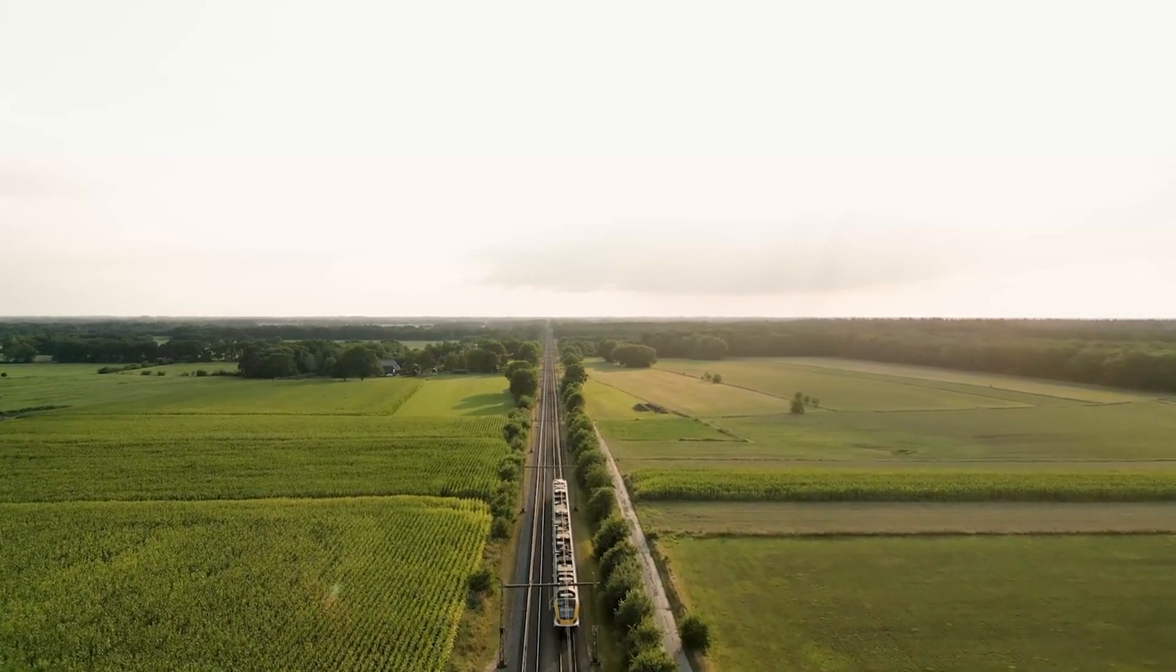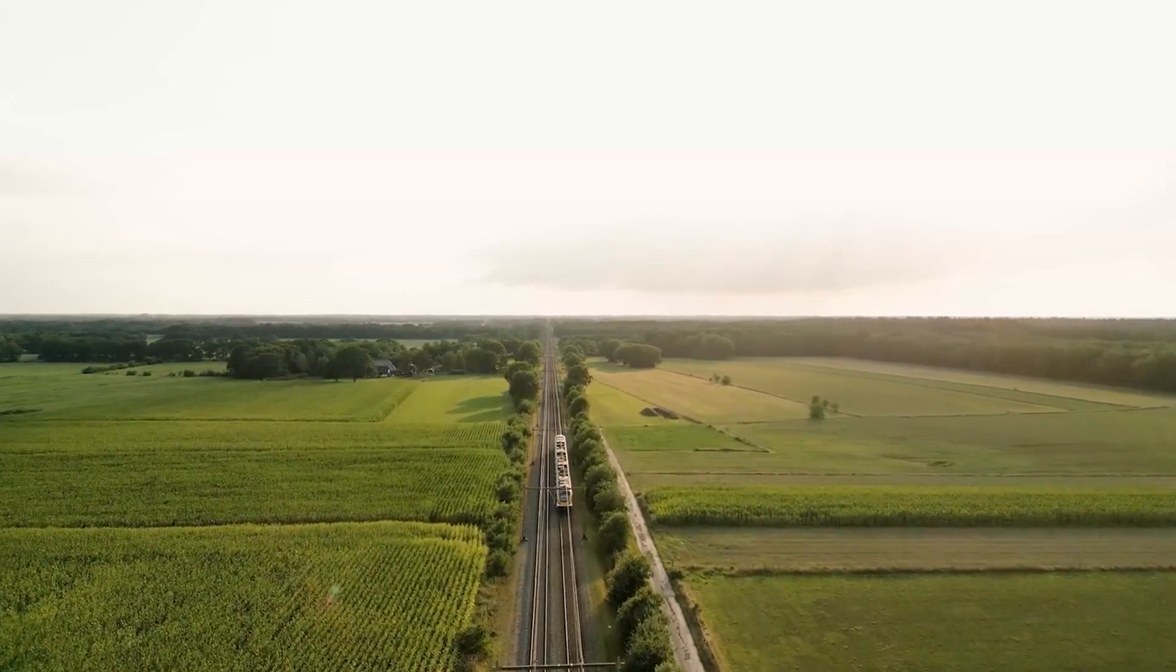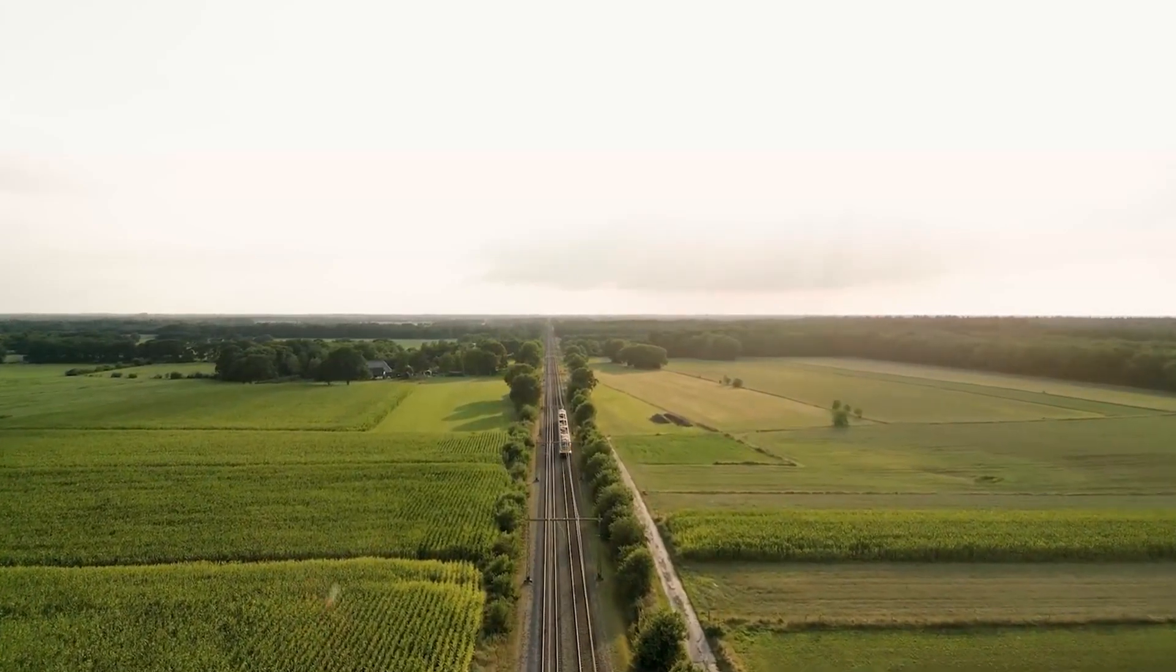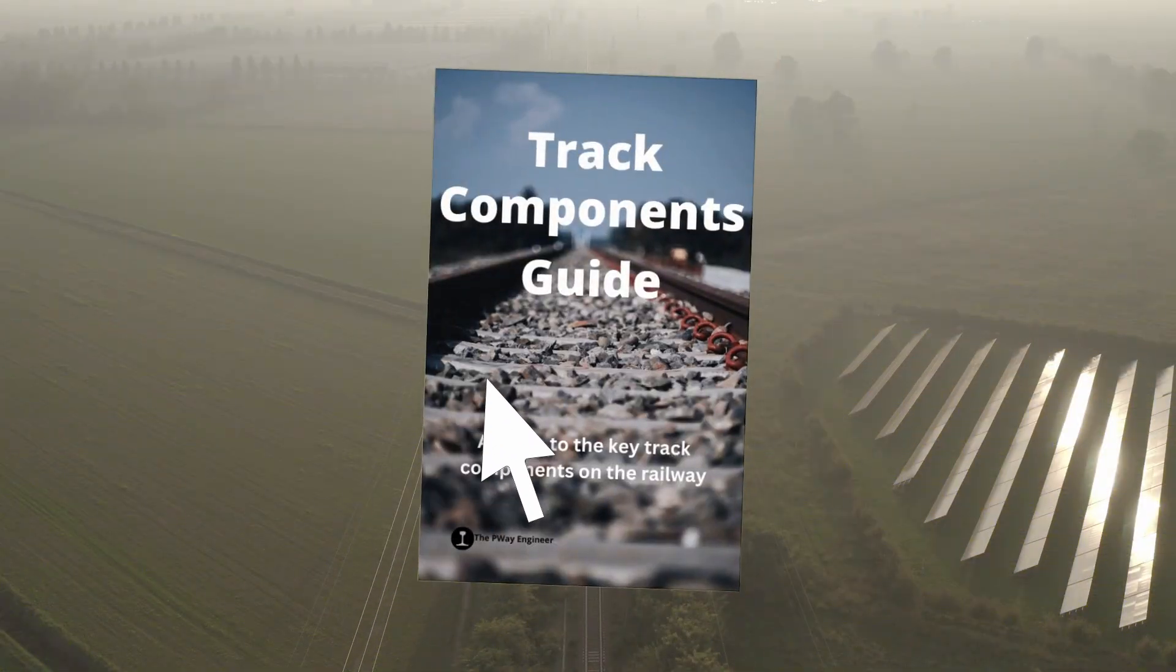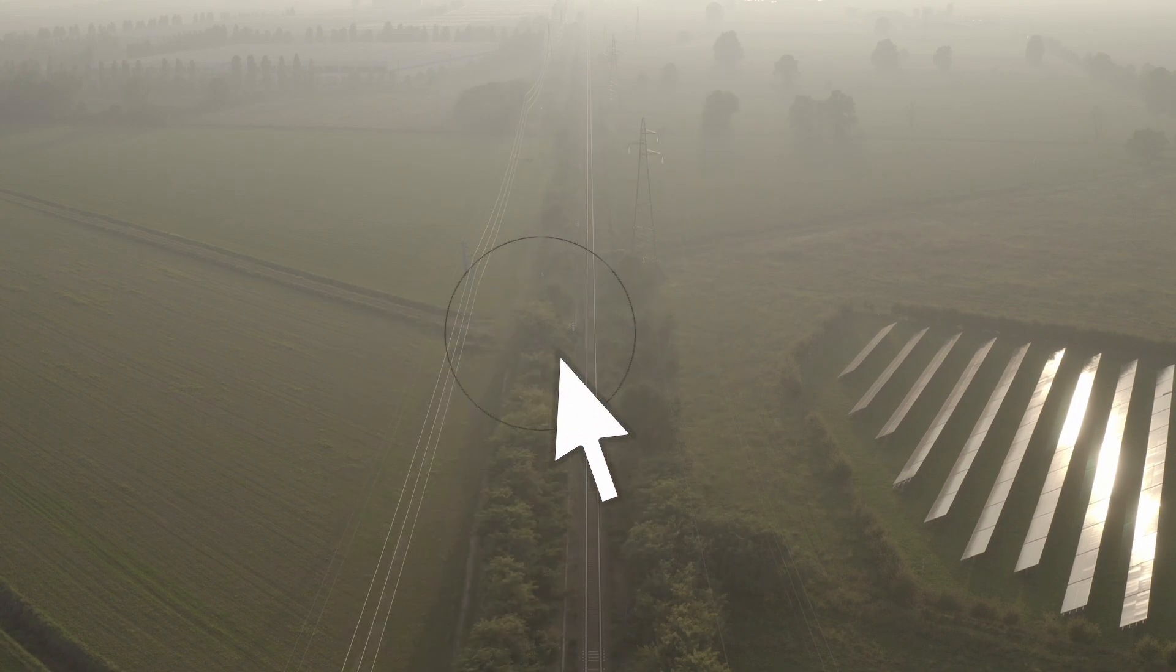So now you know about cant gradient, the sometimes forgotten track geometry design variable. I hope you've enjoyed this video, and if you want to know more about railway engineering, a great place to start is with our Track Components Guide eBook that is available at the link in the description.